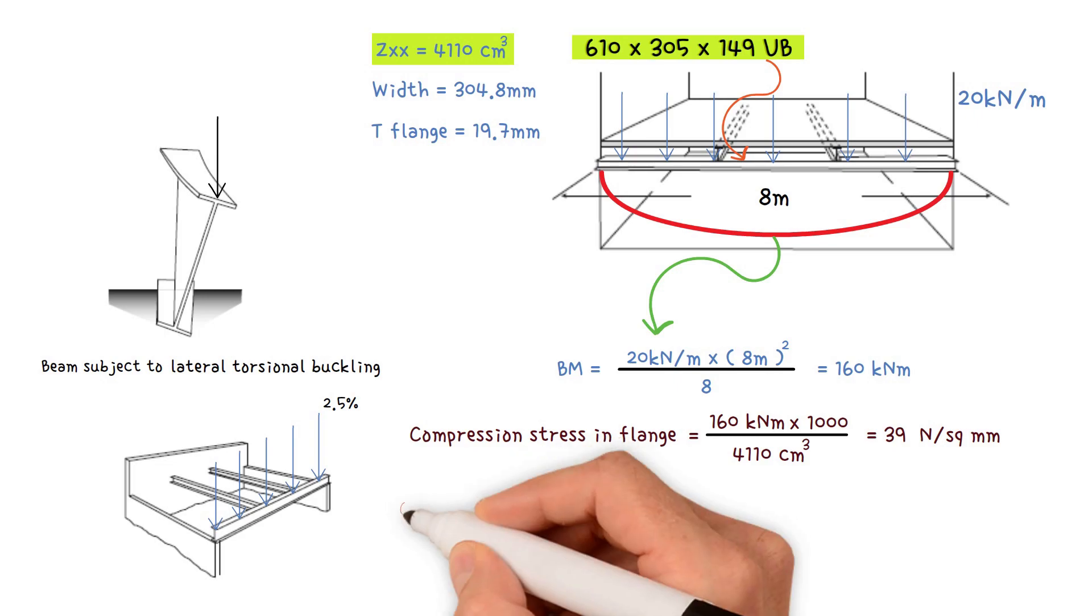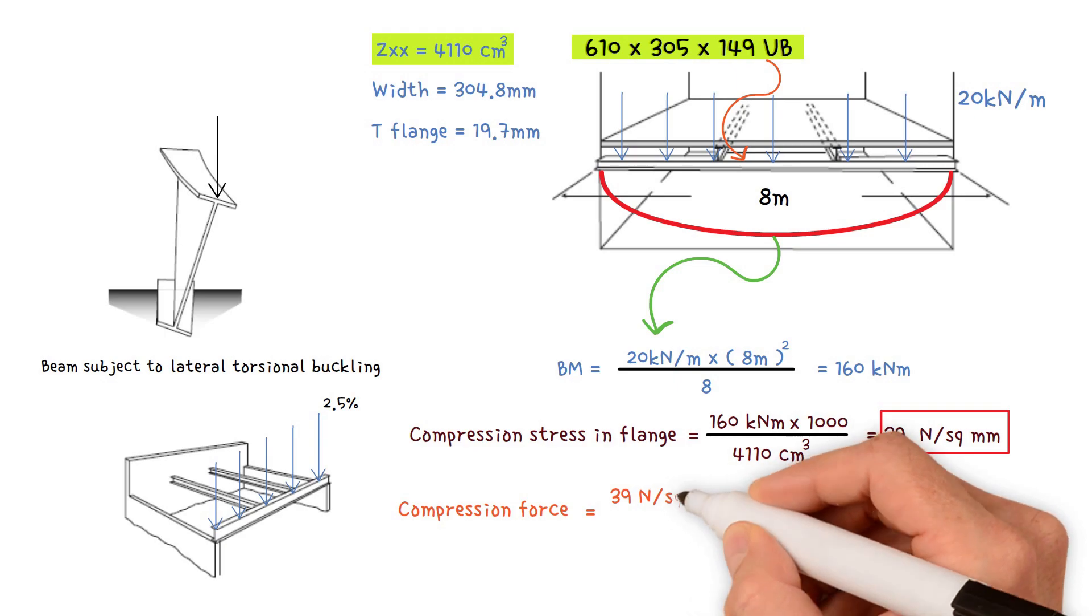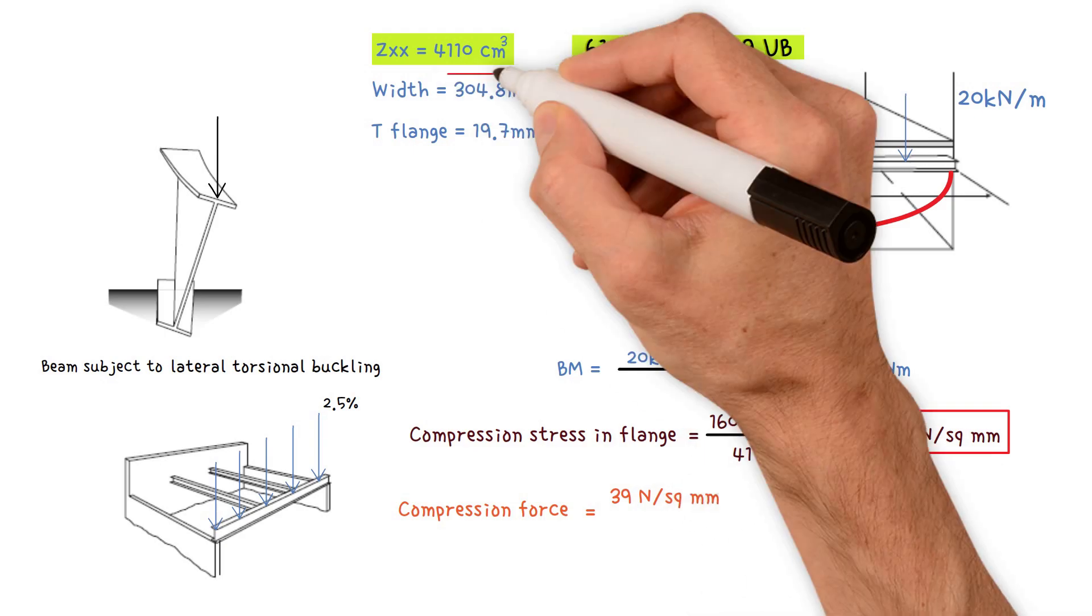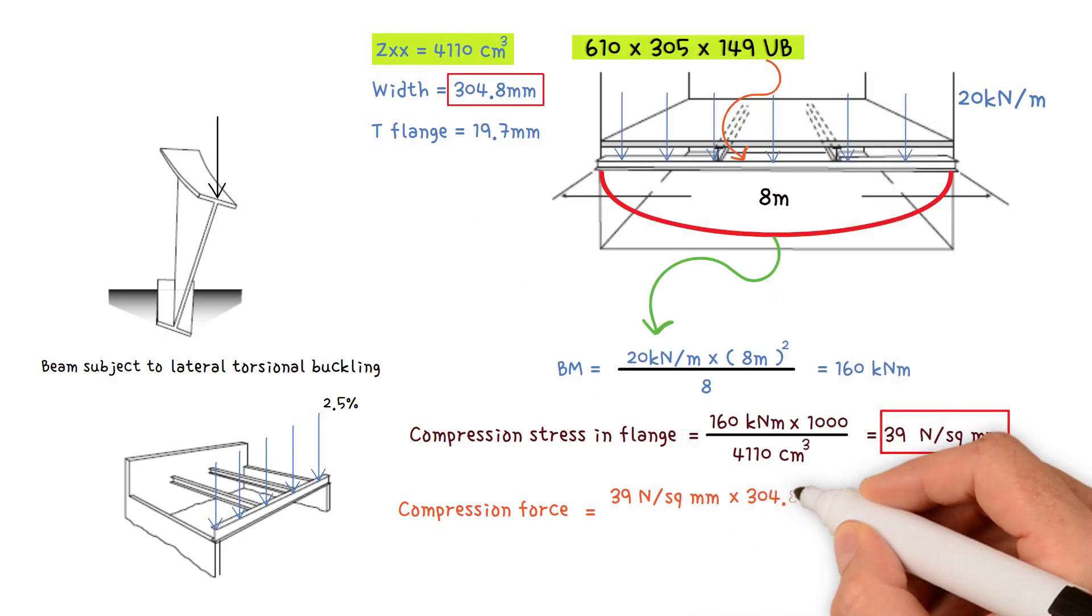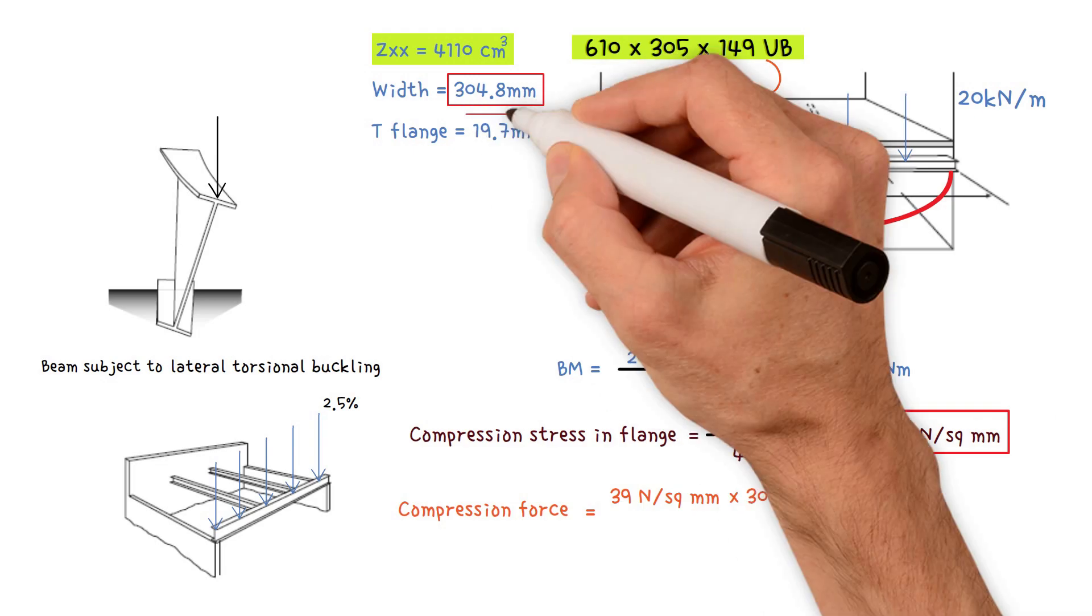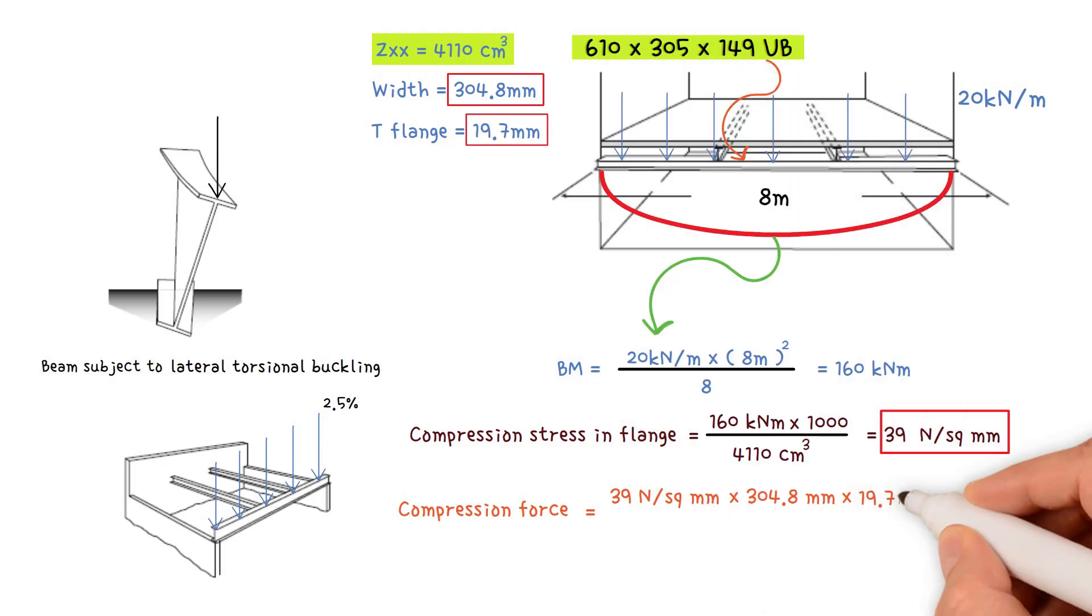Next, we work out the compression force, which equals the compression stress of 39 newtons per square millimeter, times the beam width of 304.8 millimeters, times the flange thickness of 19.7 millimeters. We divide by 1000 to convert newtons to kilonewtons, giving us 233.75 kilonewtons.